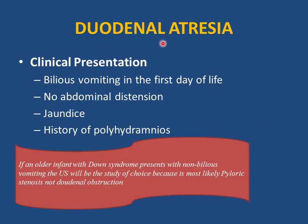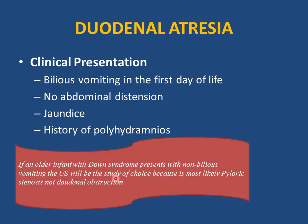Clinical presentation of duodenal atresia: bilious vomiting in the first day of life, no abdominal distension, possible jaundice from dehydration, and history of polyhydramnios. Remember: if an older infant with Down syndrome at 4 weeks presents with non-bilious vomiting, order ultrasound to assess for pyloric stenosis, not duodenal atresia, since duodenal atresia presents early with bilious vomiting.